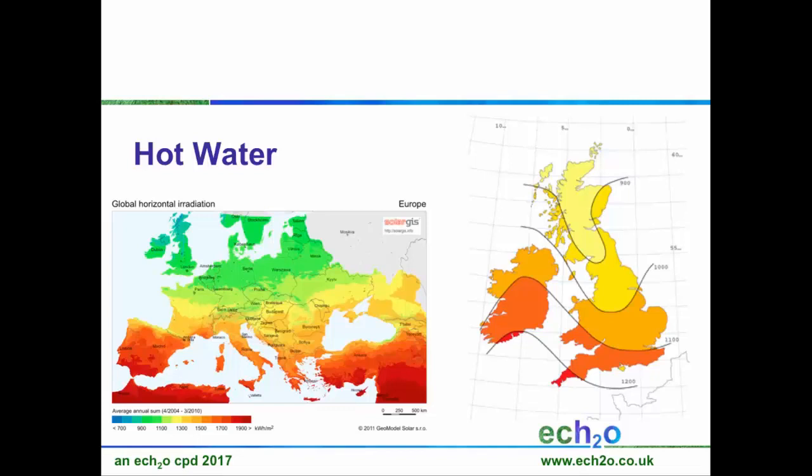If we look at the UK compared to southern Spain, Greece, or Italy — it doesn't have as much solar irradiation, but it's still got enough to give us solar thermal. We can get enough hot water for a family of four to six and achieve about 50% of our hot water through the year by using solar thermal. In the summer months, we'll get most of our hot water as long as we size it correctly. In the winter months, we'll be able to preheat.